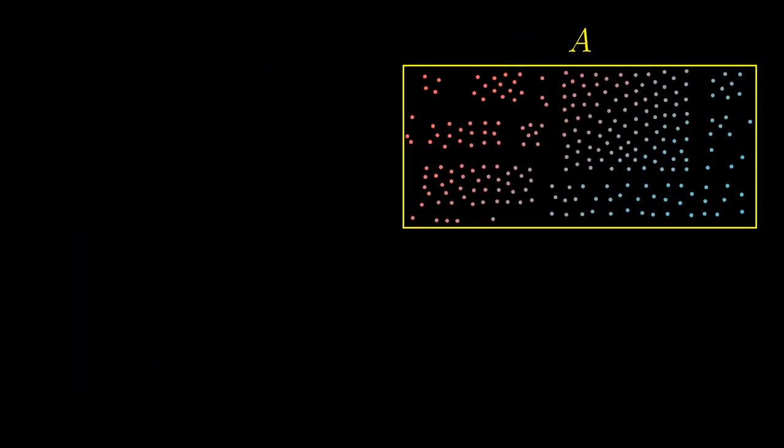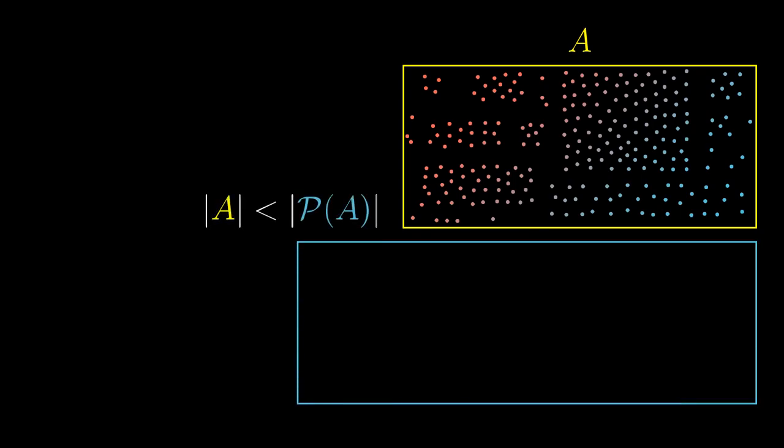Let's denote the union as A. However, whenever we make a power set PA we must obtain a set of a strictly larger cardinality. That's absurd.